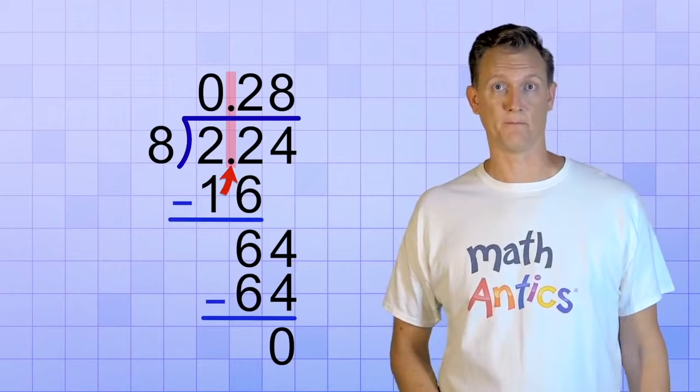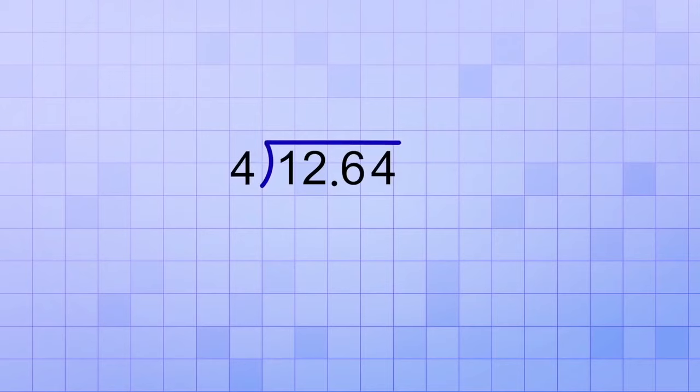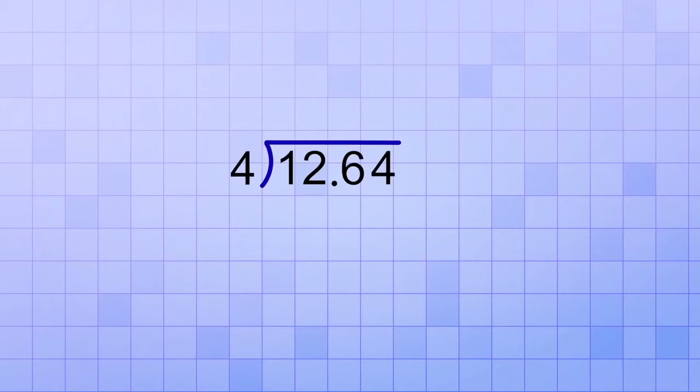So if you have the division problem, 12.64 divided by 4, you would follow the division procedure as if the decimal point was not even there and you'd get 316 in the answer line. But then, you need to bring a copy of the decimal point straight up into the answer line.